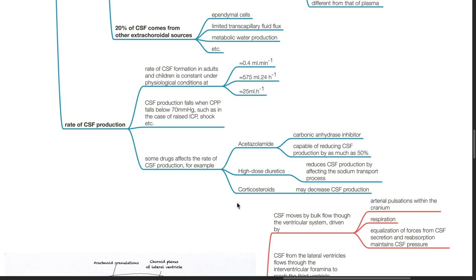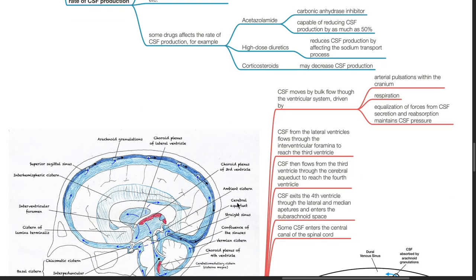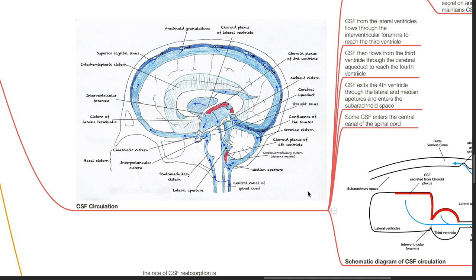Corticosteroids may decrease CSF production. CSF Circulation.